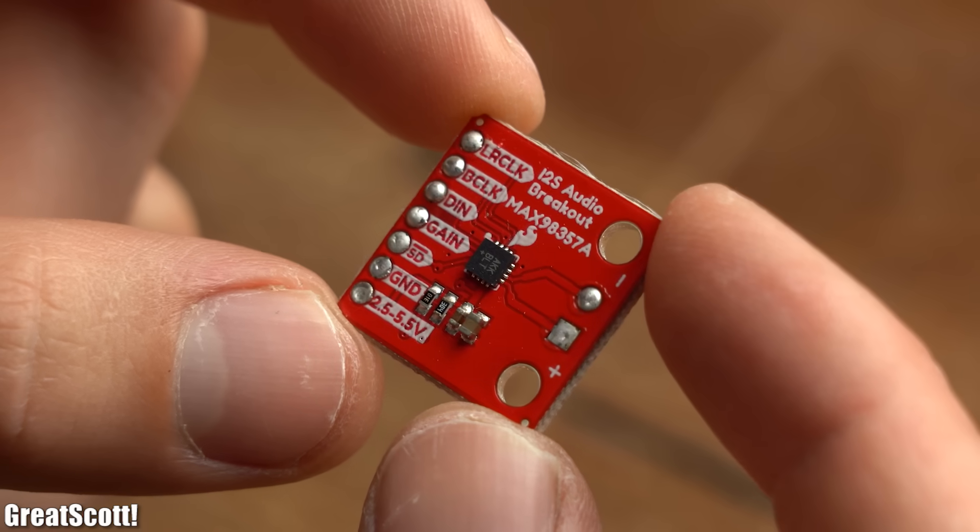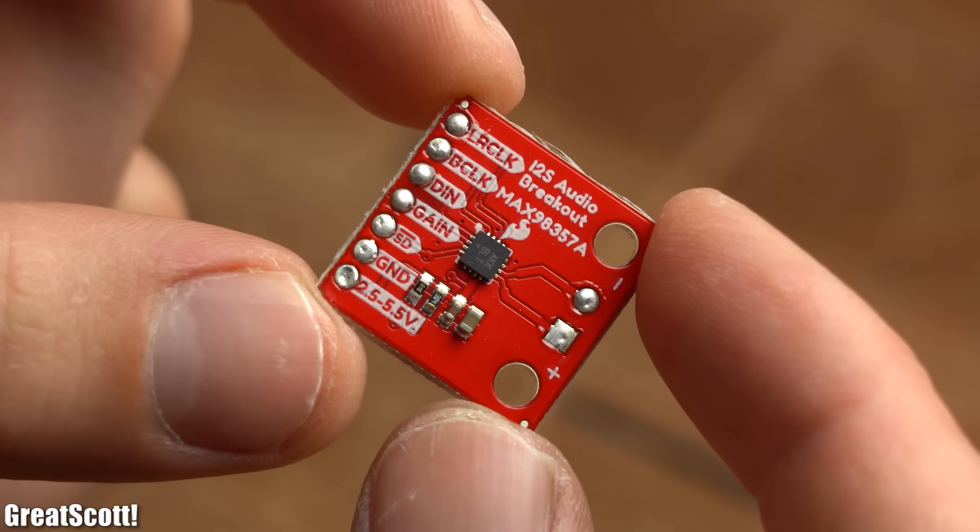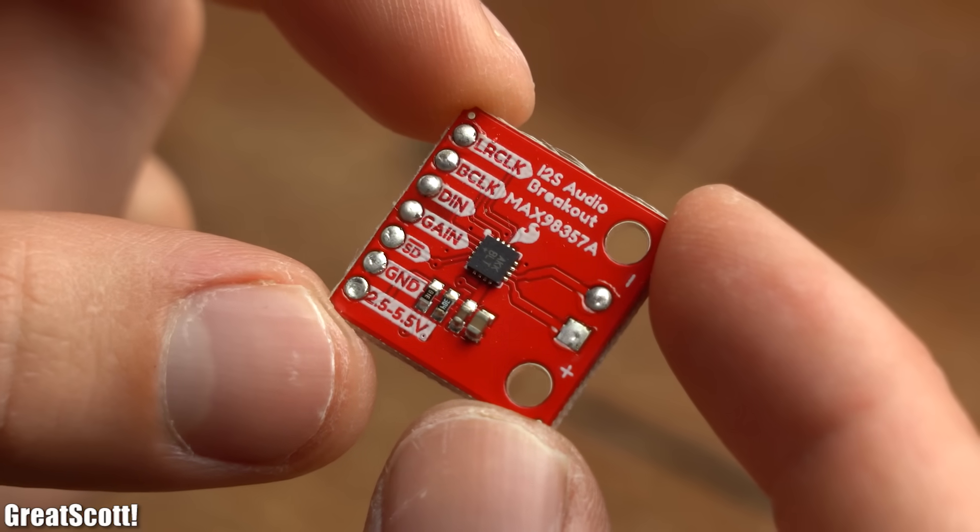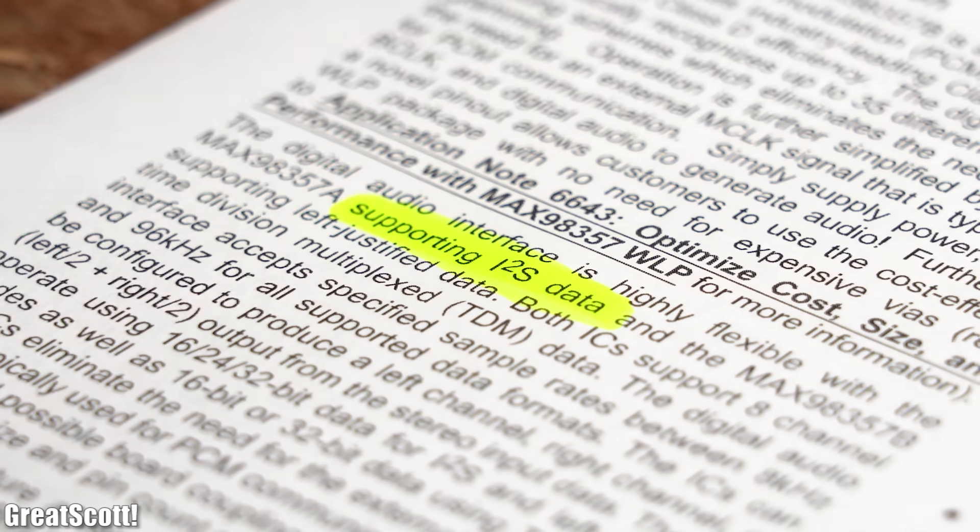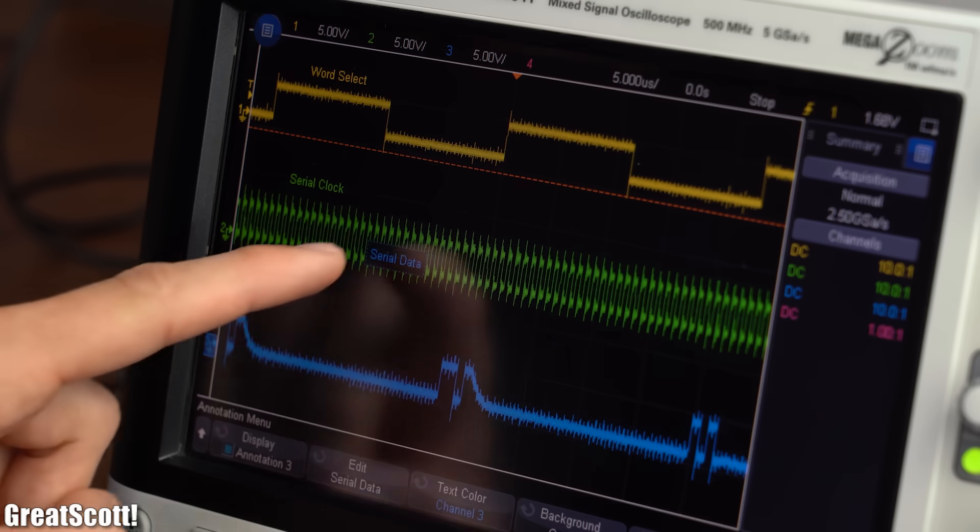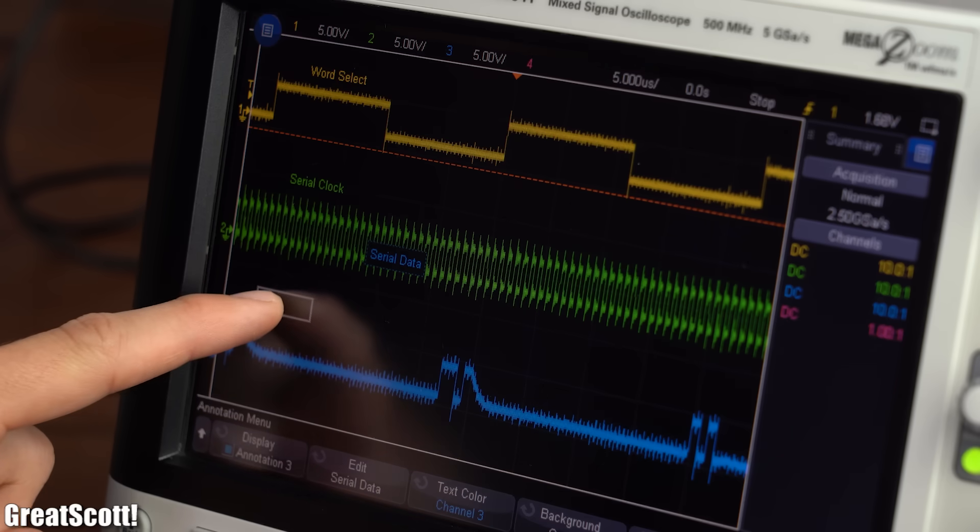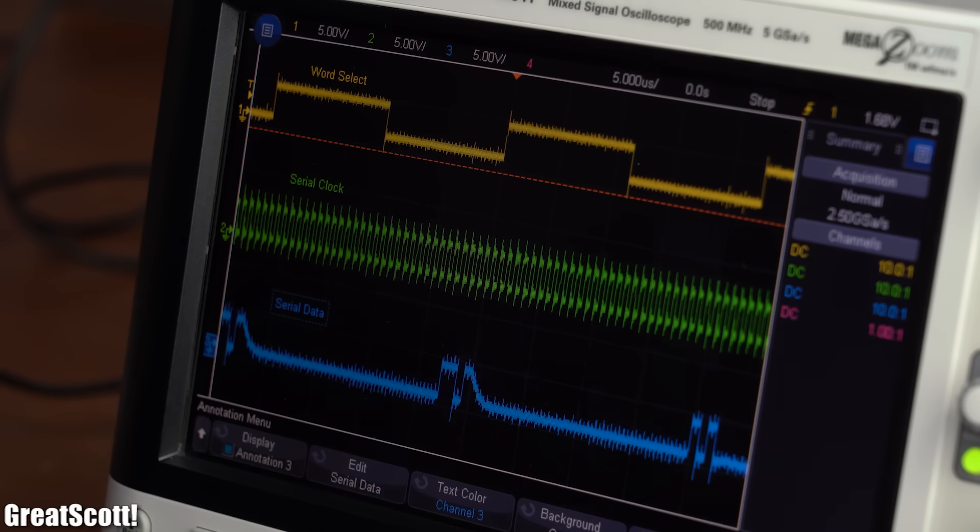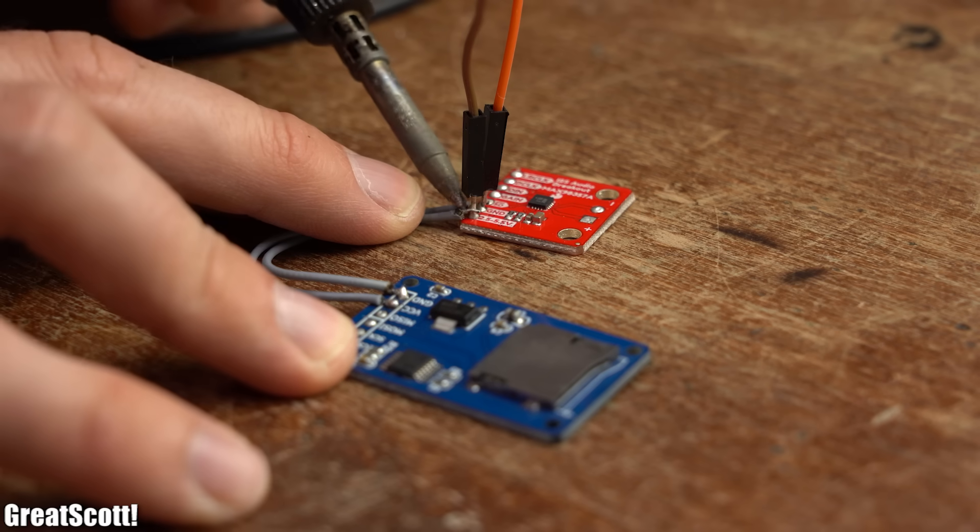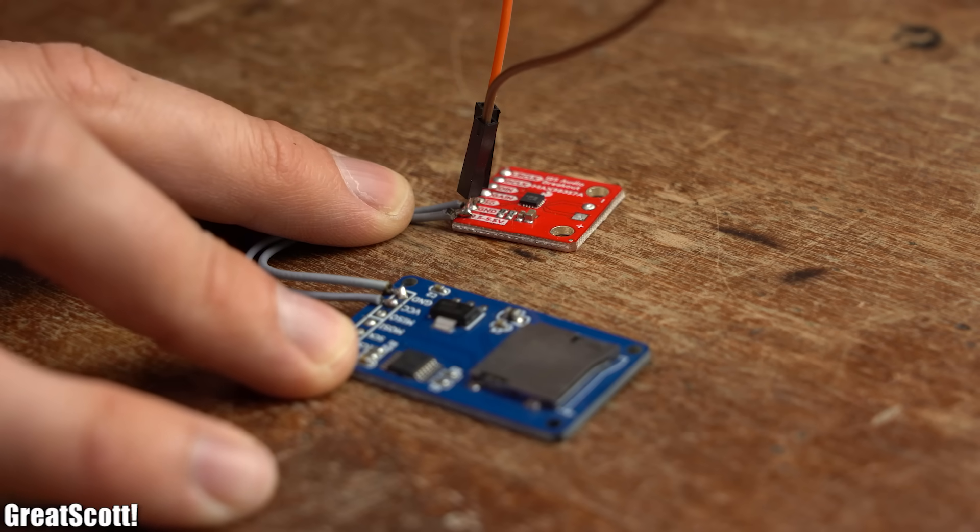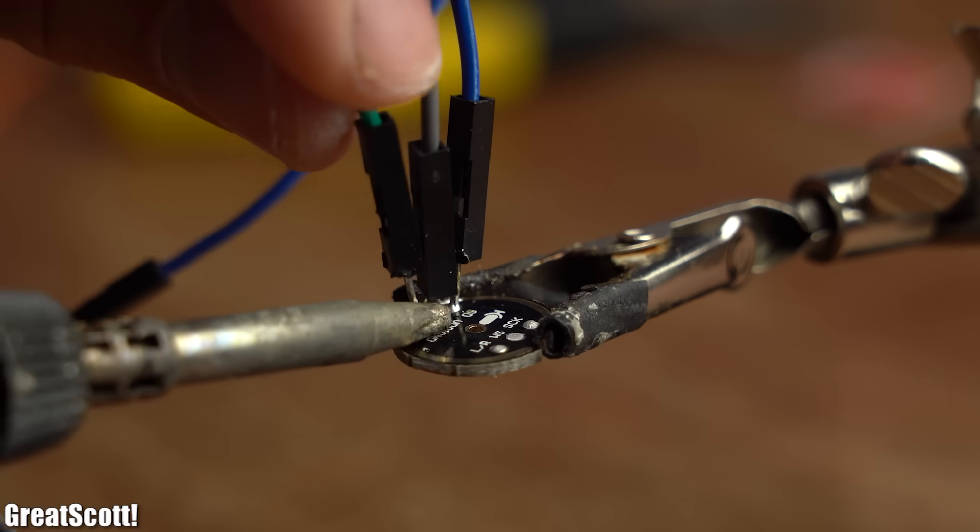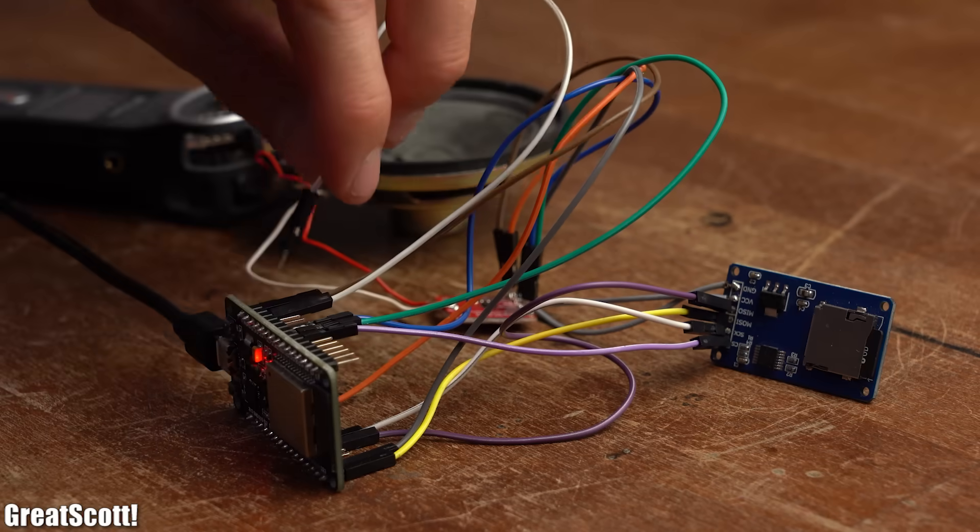Instead I wanted to use this MAX98357A amplifier breakout board which uses I2S to communicate. So in this video we will find out what I2S is and why it is pretty handy to use. And along the way we will not only learn working with the I2S amplifier board but also with an I2S microphone board. Let's get started.